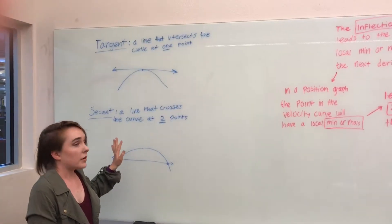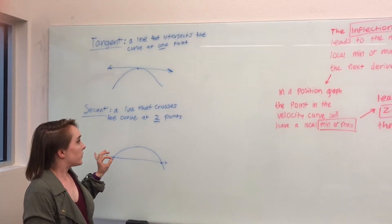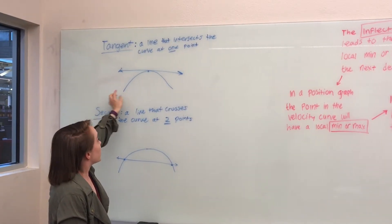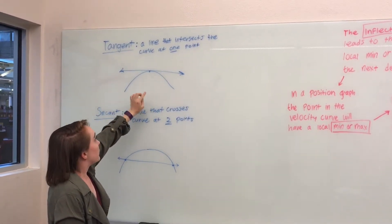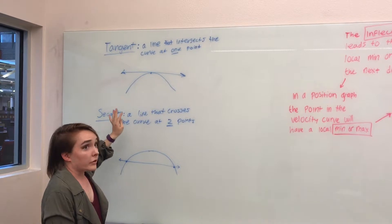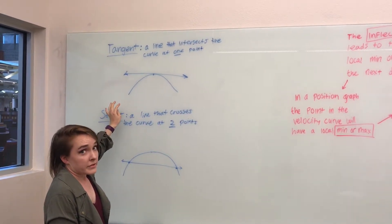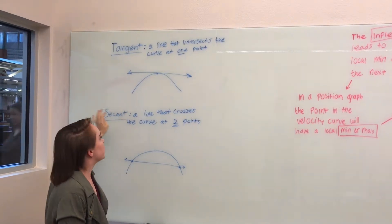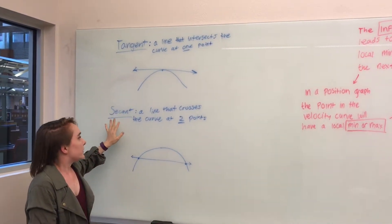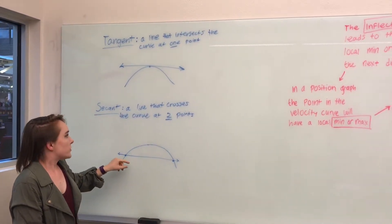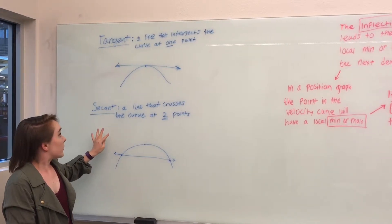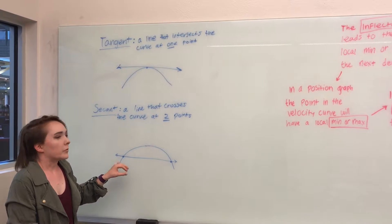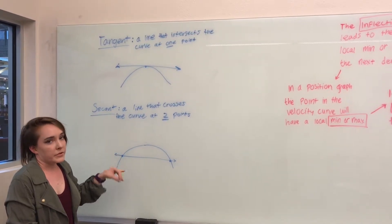In a graph of a time relationship, we have a tangent line that intersects the time curve at one point. The tangent represents the instantaneous velocity or displacement. We also have the secant line, which on the contrary represents the average value in a time history graph.